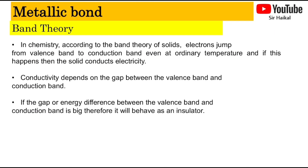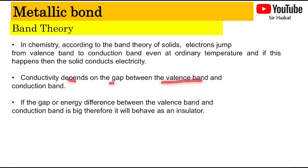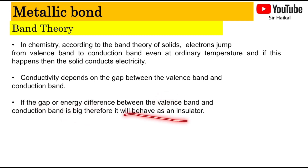Metallic bonding is related to the band theory. In chemistry, according to the band theory of solids, electrons need to jump from a valence band to the conduction band, even at ordinary temperature. If this happens, the solid — usually a metal — will conduct electricity. Conductivity depends on the gap between the valence band and the conduction band. If the energy difference between them is big enough, the material will behave as an insulator.